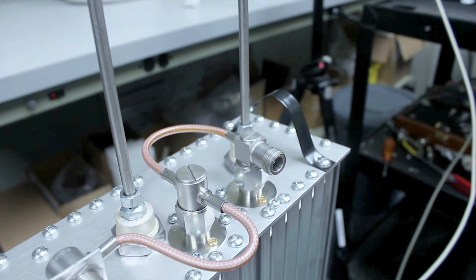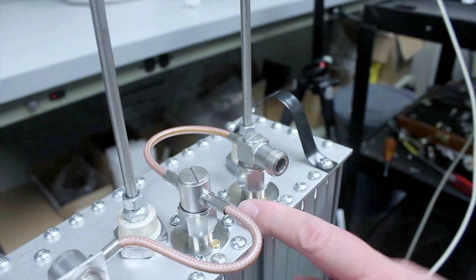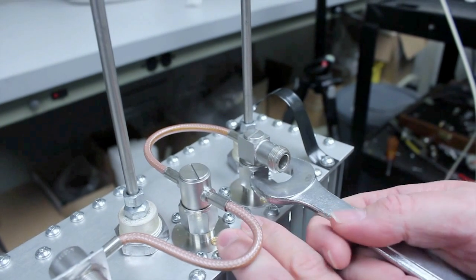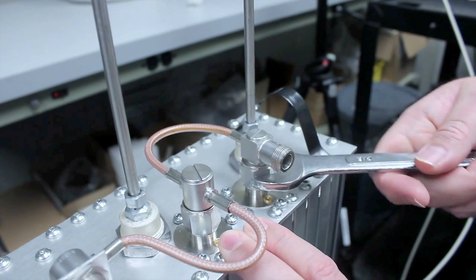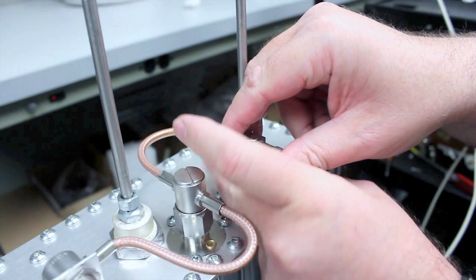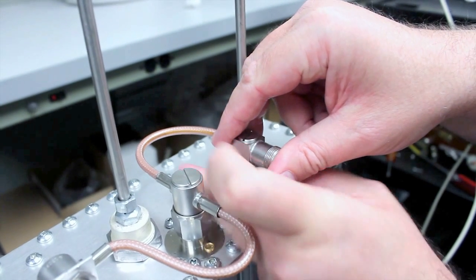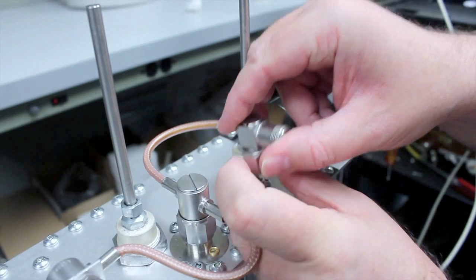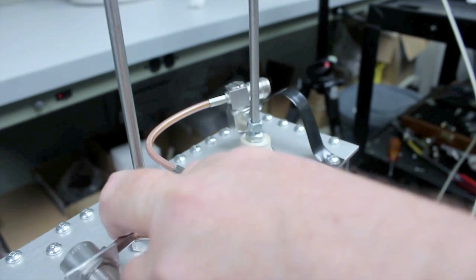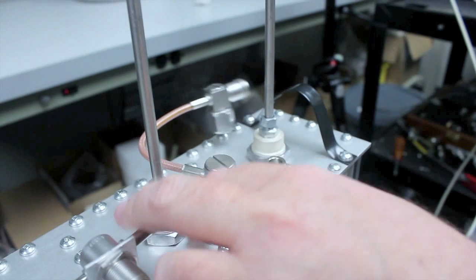When first tuning the duplexer, it's a lot easier if you initially tune the cavities individually. So use the three-quarter inch wrench to loosen the connector on the cavity and remove the harness. If you do both cavities on one side at the same time, then the cable won't be in the way as much.